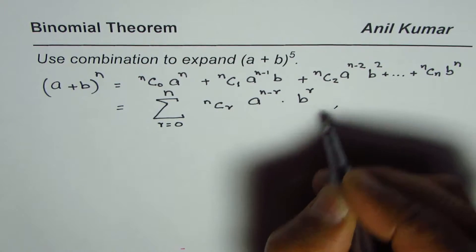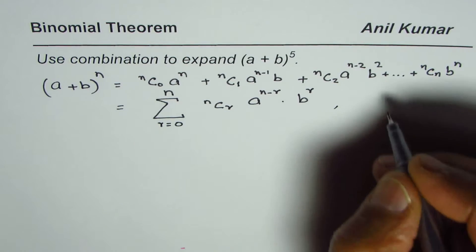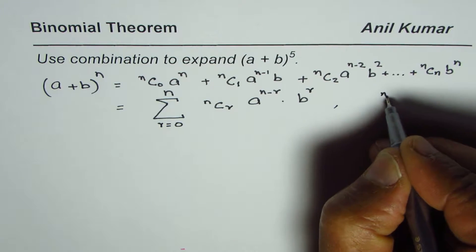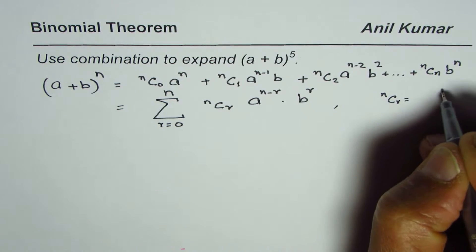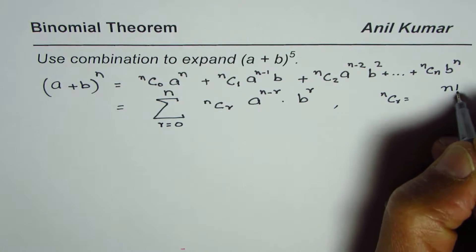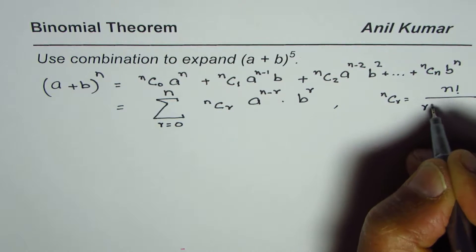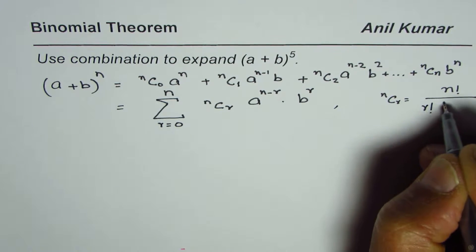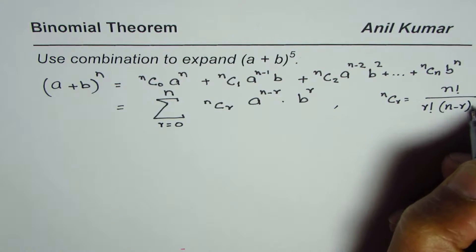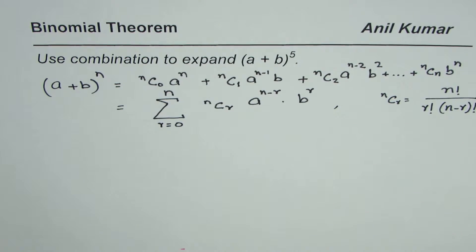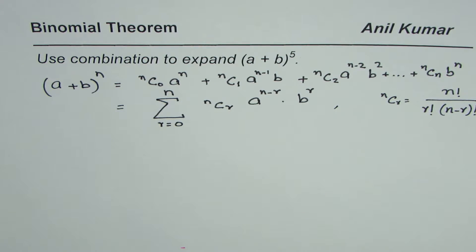Now, what is nCr? nCr is n factorial divided by r factorial times (n minus r) factorial. It is also a function on the calculator — use a scientific calculator to calculate it.